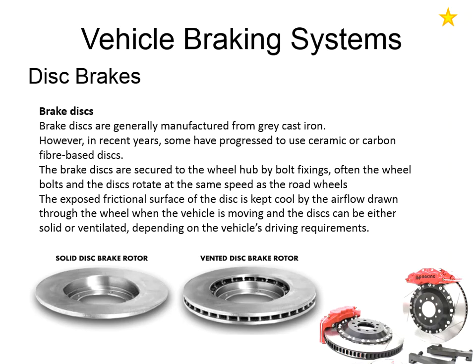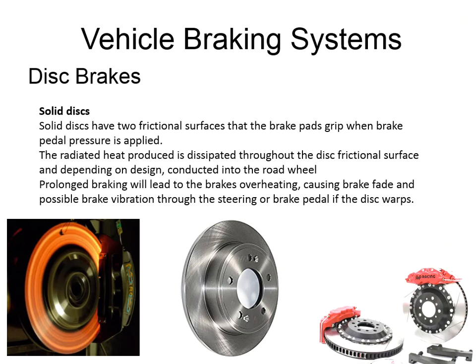There are two main different constructions of brake disc: either solid, as in the image on the left-hand side, or ventilated, as in the image on the right-hand side, which allows airflow between the two friction surfaces to better cool the brake. Solid brake discs are still used on small, light, or less powerful cars. But once we reach a certain power or vehicle weight, having both friction surfaces joined means the brake can't cool fast enough and will overheat.